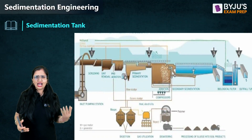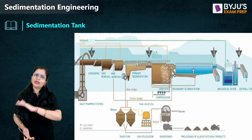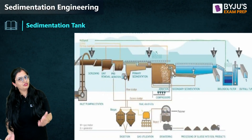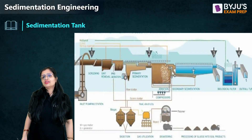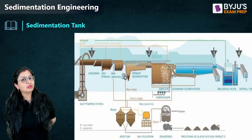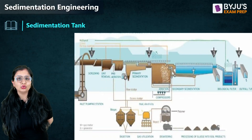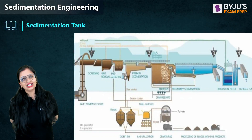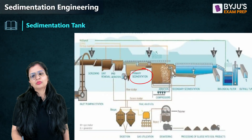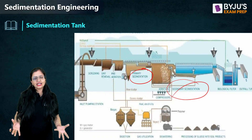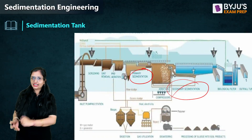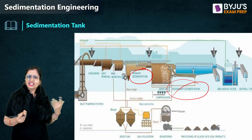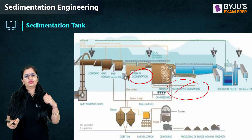Do we have one sedimentation tank or two? It varies. For raw water treatment — the water supplied to your homes from the source — we go for only one sedimentation tank. But for wastewater treatment, where water from your homes after use is to be disposed, we have two sedimentation tanks: a primary sedimentation tank and a secondary sedimentation tank.